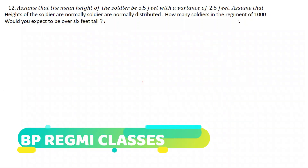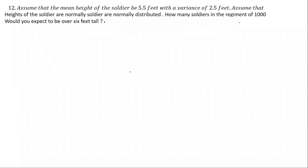Assume that the mean height of the soldier is 5.5 feet with a variance of 2.5 feet. Assume that the heights of the soldiers are normally distributed. How many soldiers in a regiment of one thousand would you expect to be over six feet tall?